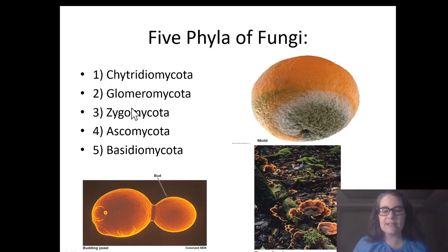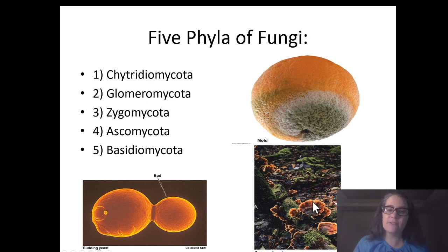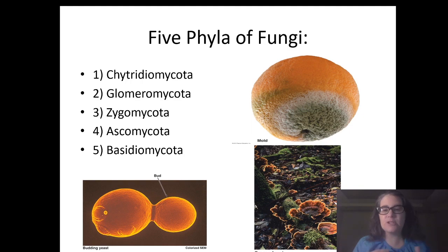You probably know a little about Zygomycota because that's bread and fruit mold — things you'll find in your kitchen. Ascomycota are the sac fungi, which includes yeast and penicillin, so some drugs come from that class. And Basidiomycota are the cap fungi, which includes shelf fungi but also many fungi you eat like oyster mushrooms, shiitake mushrooms, and portabellas.